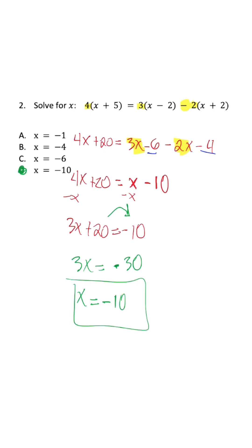If you want to double check this, just plug negative 10 back in for every x that you see, and then simplify.